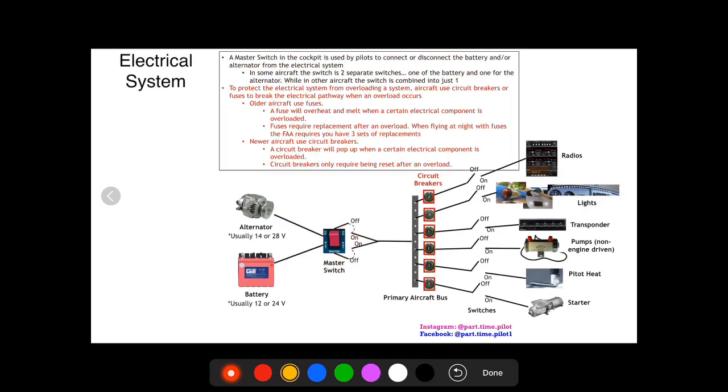The next component we need to talk about is circuit breakers. To protect the electrical system from overloading, aircraft use circuit breakers or fuses to break the electrical pathway when an overload occurs. So the circuit breakers are in line here before the components to protect the components from damage if an over-voltage occurs. So what happens is in a circuit breaker, if there's an over-voltage, the circuit breaker pops out and it essentially is doing the same thing as switching the radios to off. It breaks the electrical pathway to the radios so that the radios are not damaged.